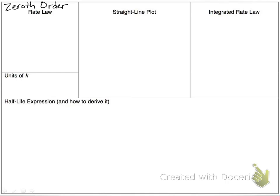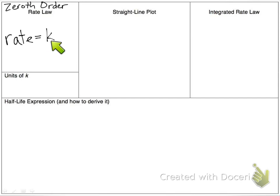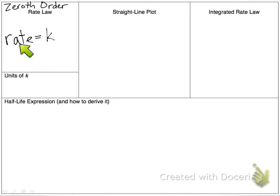In a zeroth order reaction, our rate law is rate equals k, because our rate is just a constant — it's not going to depend on the concentration. Our units of k are going to have to be the same as our units for our rate. Rate is in molar per second, or molarity per second.